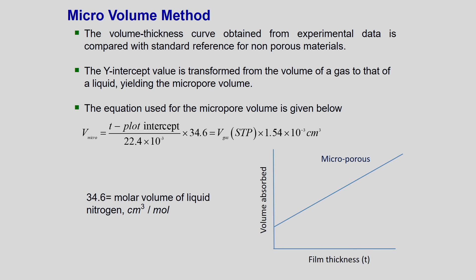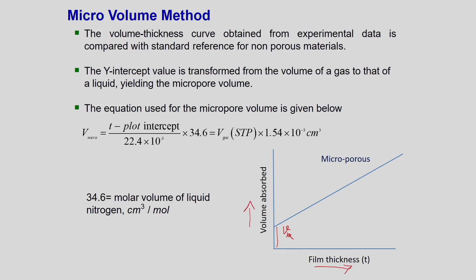We refer to this graph: the volume adsorbed is on the y-axis and the film thickness is on the x-axis. In the case of micropores, this region is called the monolayer volume, and it increases with film thickness — because as you increase the thickness, more and more nitrogen molecules get adsorbed inside the pore. The volume-thickness curve obtained from experimental data is compared with a standard reference for a non-porous material, which passes through the origin. The y-intercept is transformed to a volume of gas yielding the micropore volume.